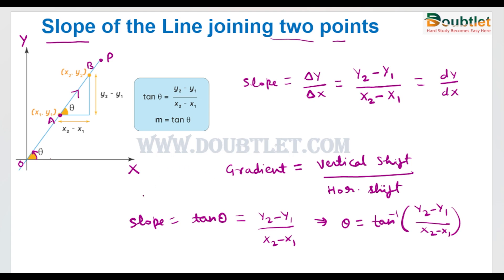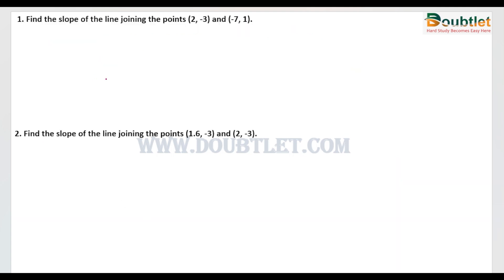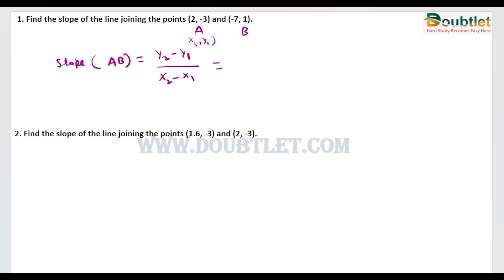This is how we can find the slope of any line joining two points. Now we will solve some examples. Suppose this is point A and this is point B, and these points lie in the Cartesian plane. To find the slope of line AB, we use the formula y2 minus y1 divided by x2 minus x1. Naming point A as x1, y1 and point B as x2, y2, we get 1 minus (minus 3) divided by minus 7 minus 2, which equals 4 divided by minus 9, giving minus 4 by 9.